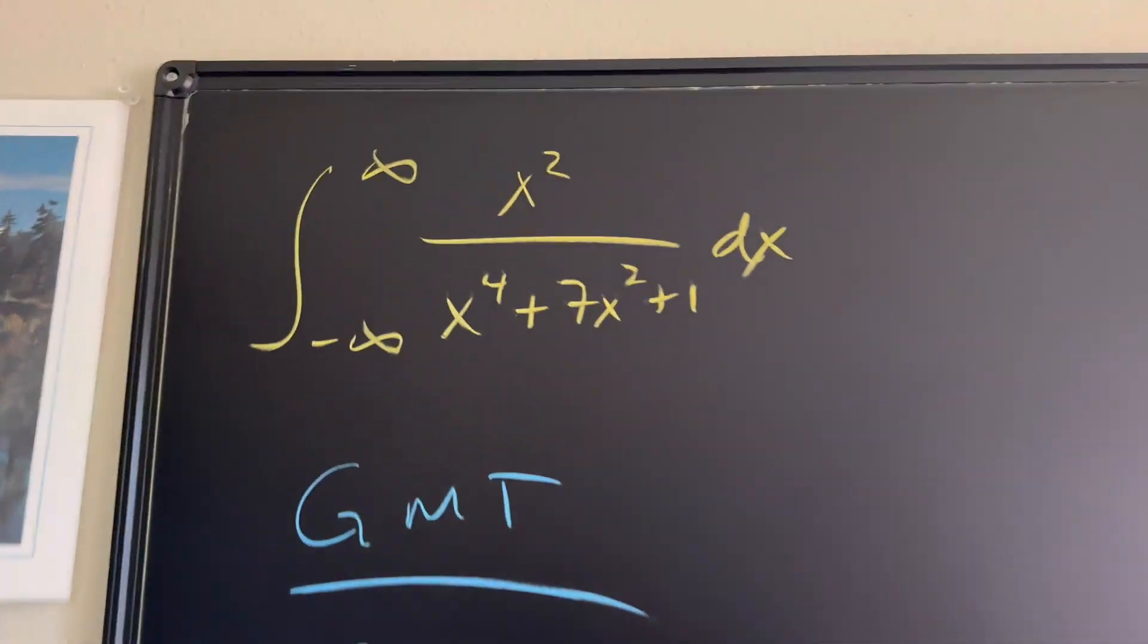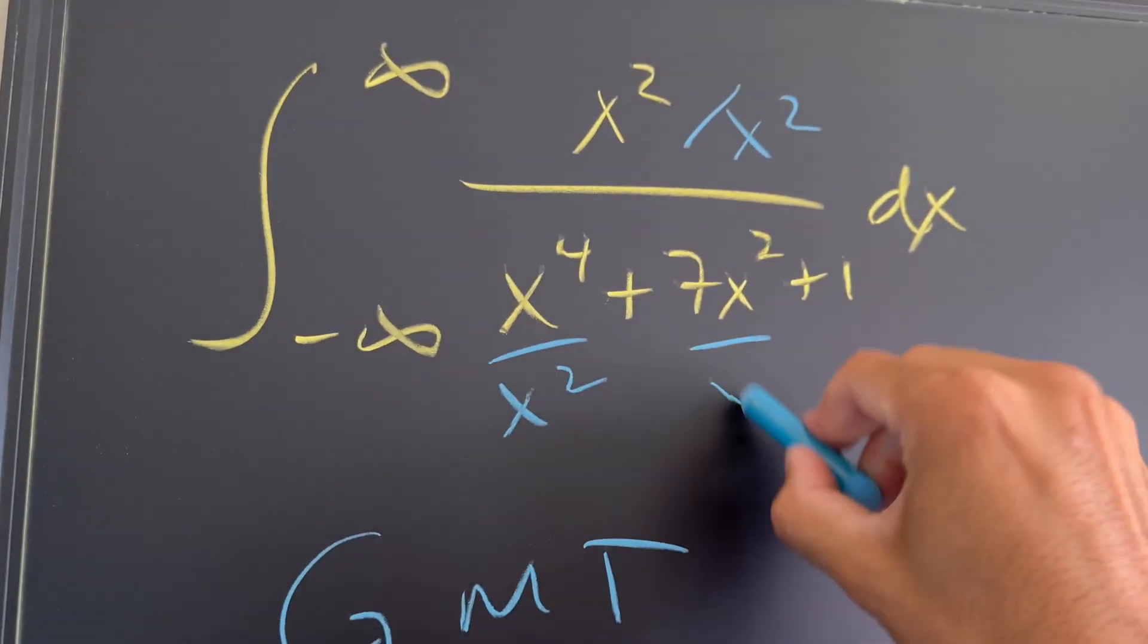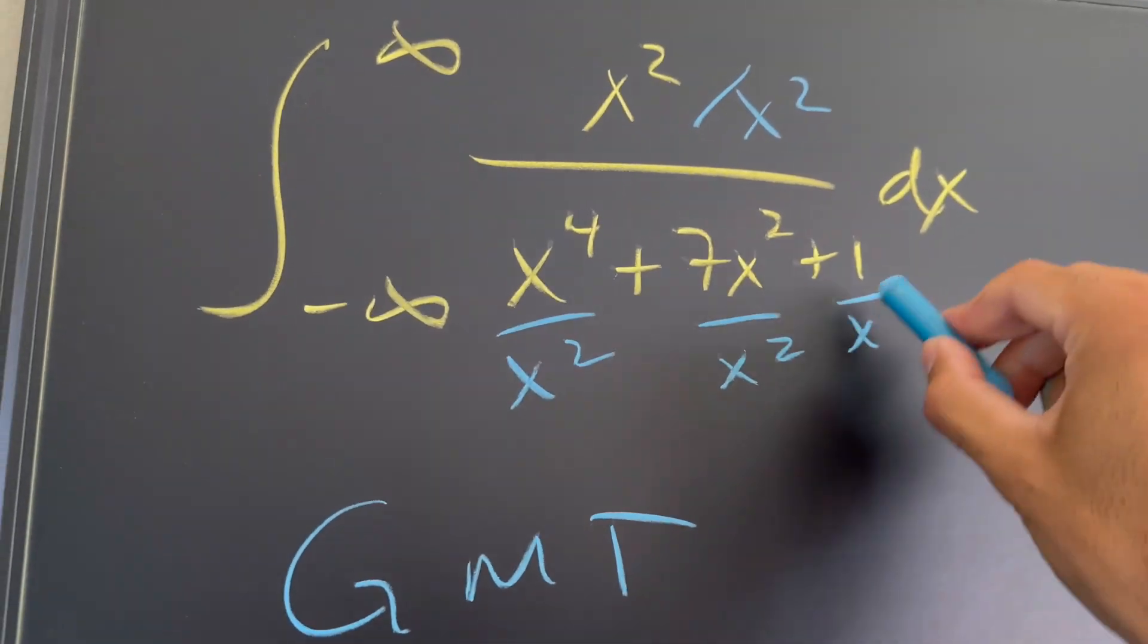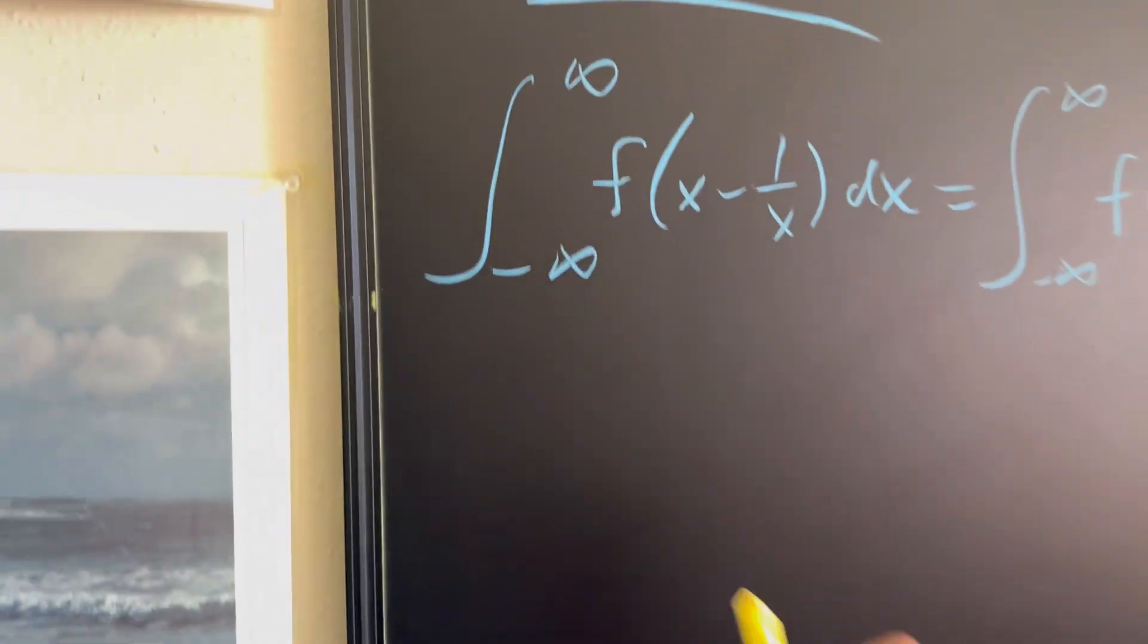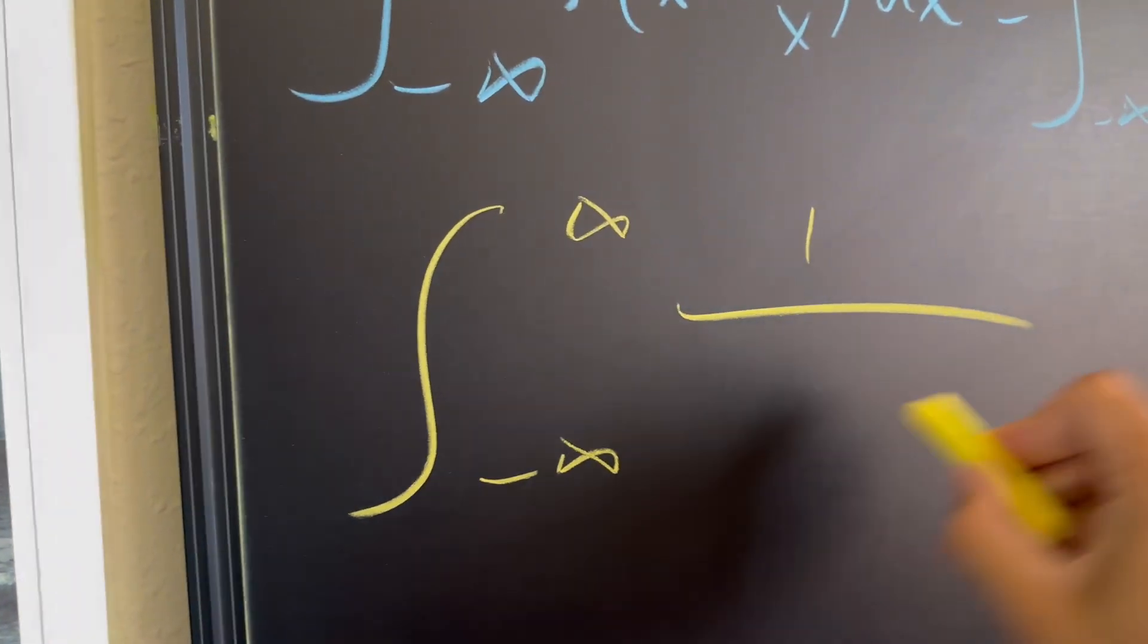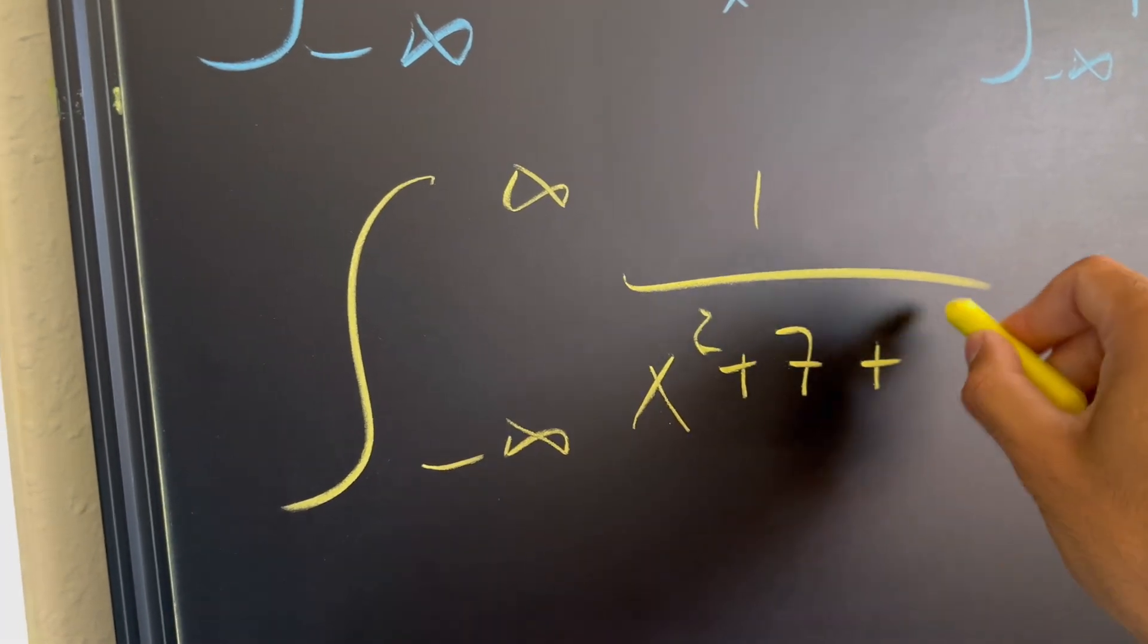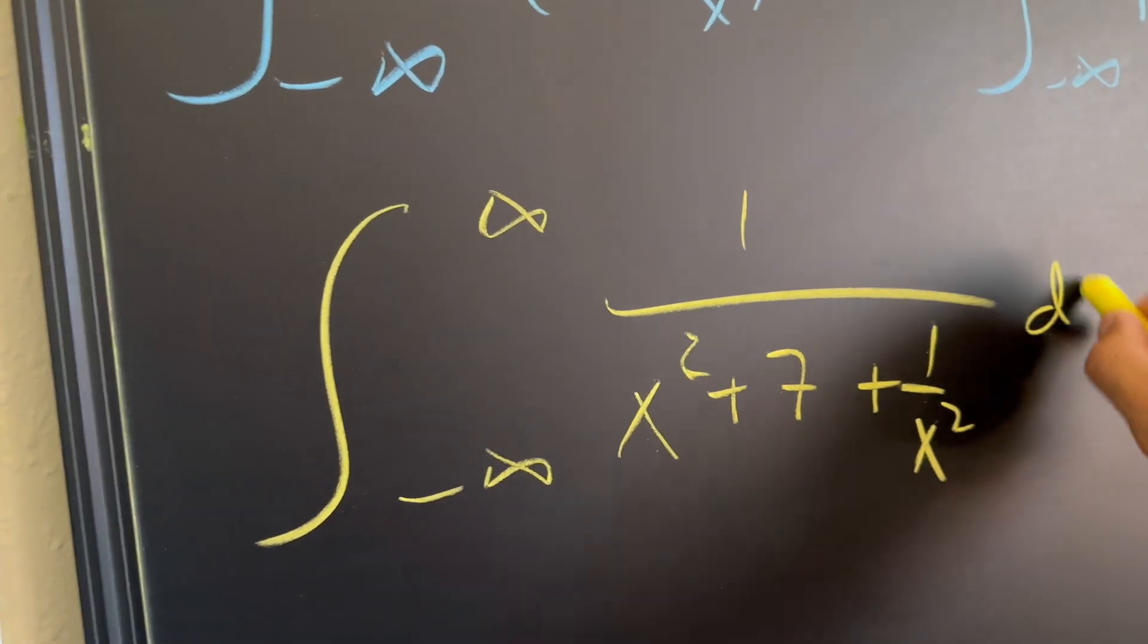Let's go ahead and start off by first dividing everything by x squared. So I divide this by x squared, divide this by x squared, and I'm dividing this by x squared. So what's going to happen? Well, our integral will become negative infinity to infinity of one over, and then we're going to have x squared plus seven plus one over x squared with respect to x.